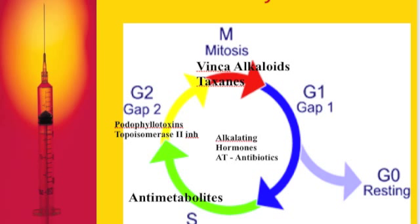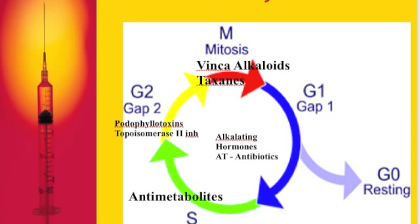Cell cycle specific drugs include alkaloids, which usually end in -stine, -bine, and -taxel; anti-metabolites, which usually end in -bine, plus 5-FU and methotrexate; and the podophylltoxins. These are most effective against rapidly growing cancer cells and are your cell cycle specific drugs.